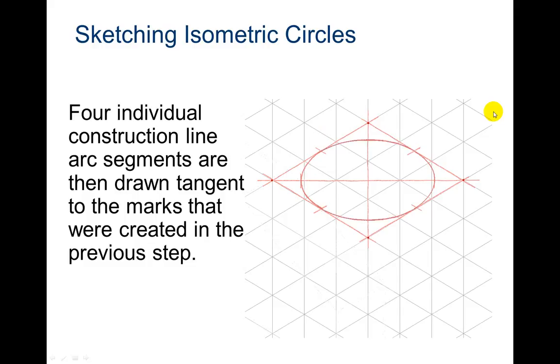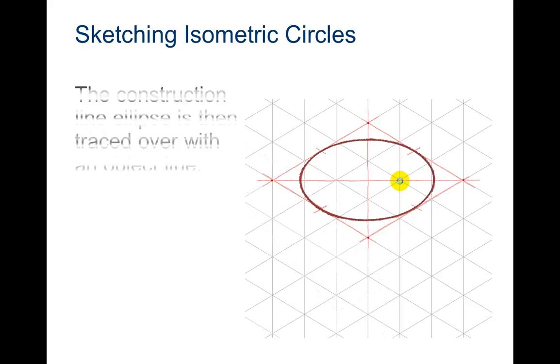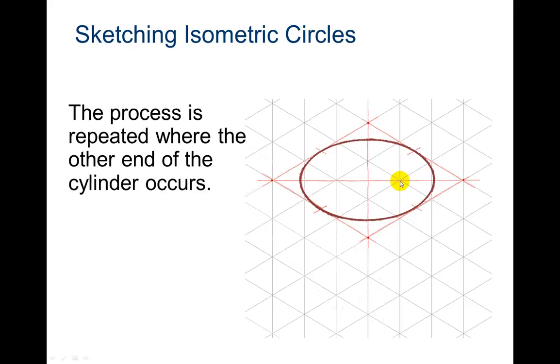Connect it. So the construction line ellipse is then traced over with an object line. So we have ellipse. The process is repeated where the other end of the cylinder occurs.